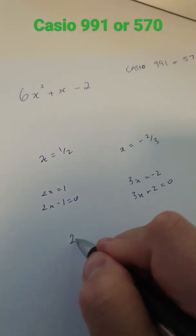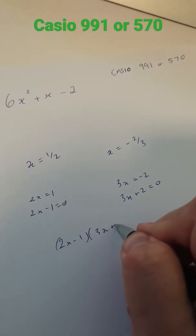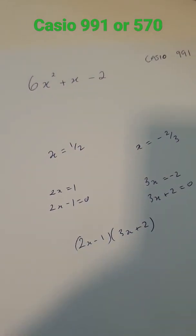This is now my bracket, so 2x minus 1, 3x plus 2. And I've now factorised.